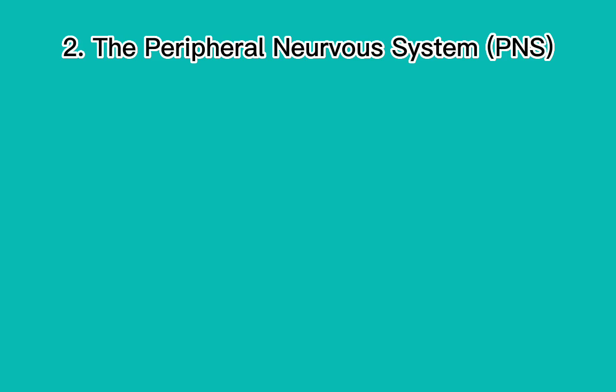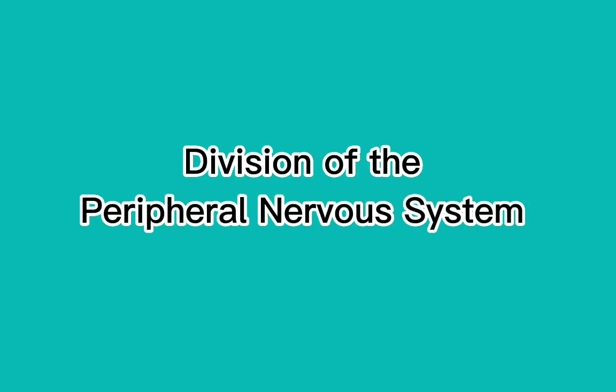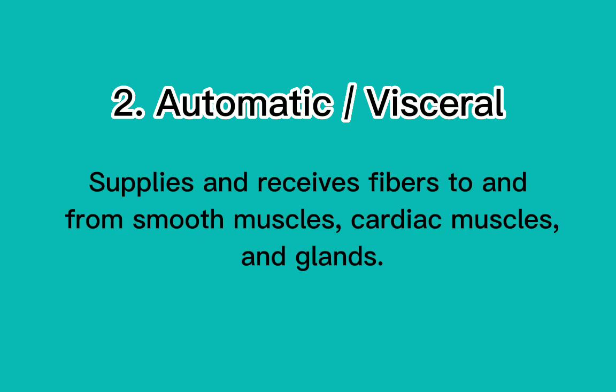2. The Peripheral Nervous System (PNS) is composed of nerves emerging from the CNS. Division of the PNS: 1. Somatic — supplies and receives fibers to and from the skin, skeletal muscles, joints, and tendons. 2. Autonomic/visceral — supplies and receives fibers to and from smooth muscles, cardiac muscles, and glands.